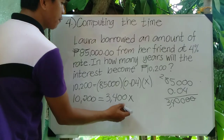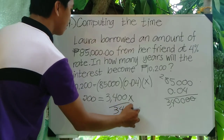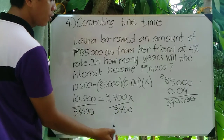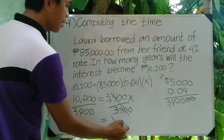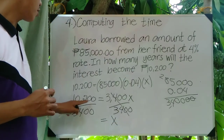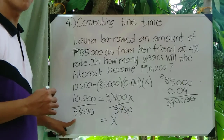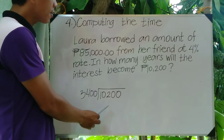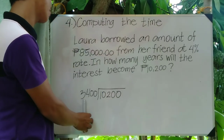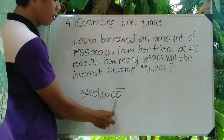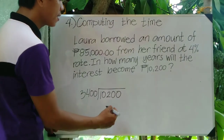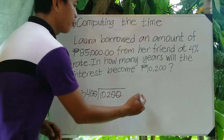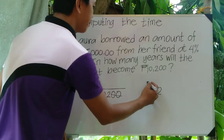To find x, divide both sides by 3,400. That cancels on the left, leaving x equals 10,200 divided by 3,400. Both numbers have two zeros, so cancel those out: the problem becomes 102 divided by 34.